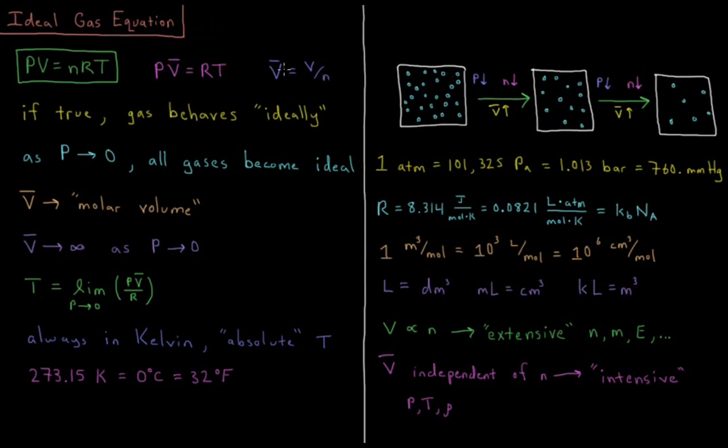The molar volume V bar is equal to the volume divided by the number of moles. So once we've gotten our molar volume, our ideal gas equation now becomes PV bar equals RT.